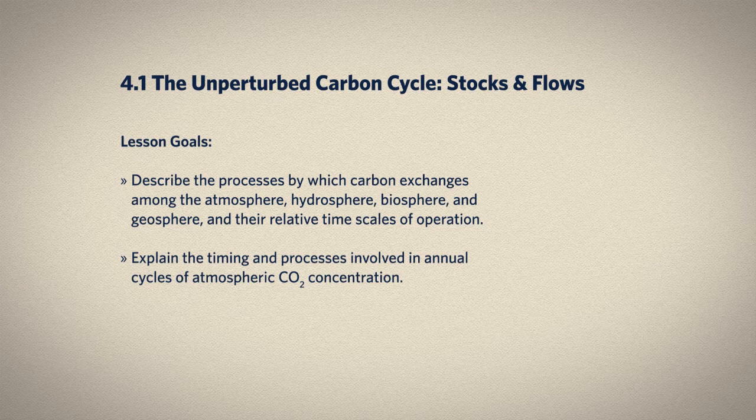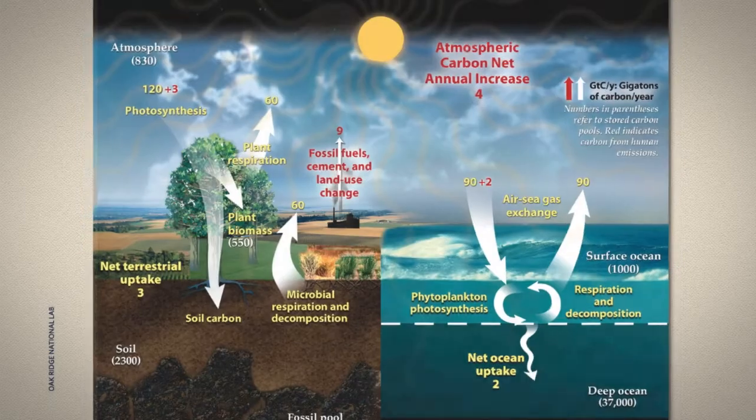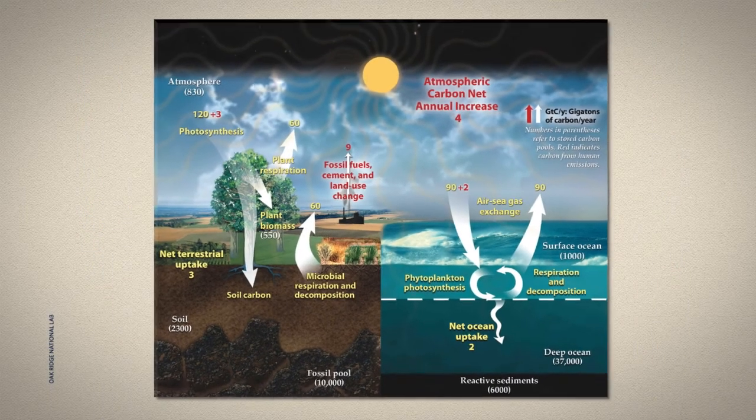In this lesson, we're going to focus on flows of carbon that are not directly related to human activities. We're going to see how much carbon moves around every year, where it goes, and how it gets there. We'll spend some time with the seasonal cycles of atmospheric carbon dioxide from a stock and flow perspective to get some practice with that. Here's a version of the carbon cycle on Earth.